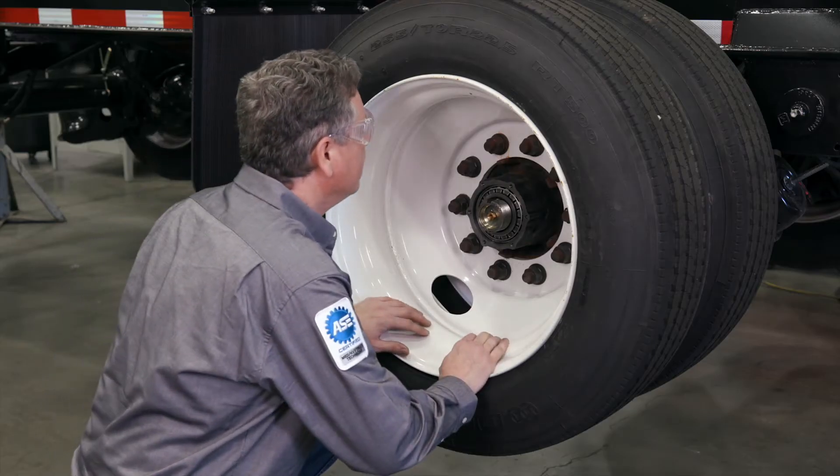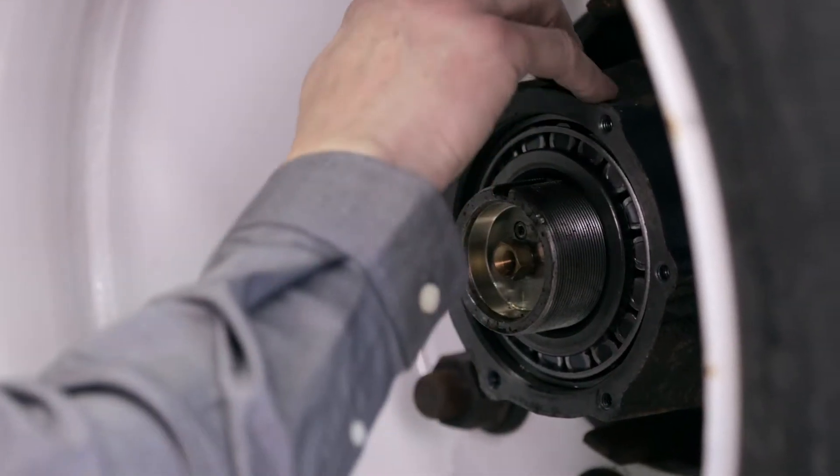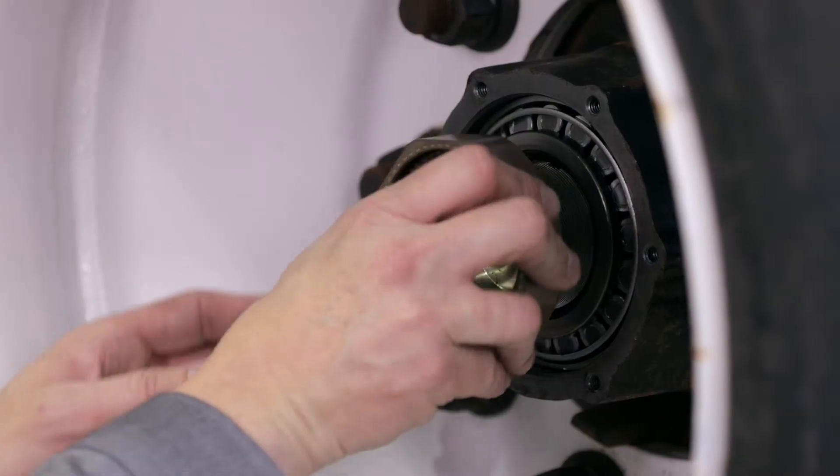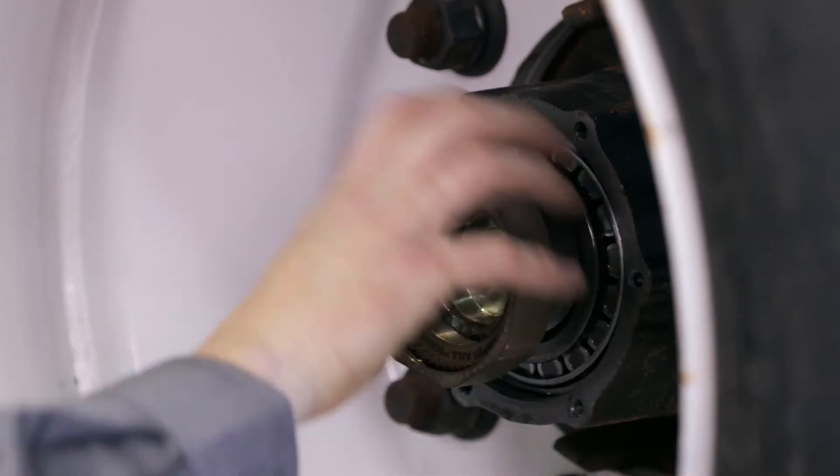Before beginning the bearing adjustment, inspect all wheel end components and repair any damage to the spindle threads. When preparing the wheel end for the bearing adjustment, ensure the hub is fully seated before making any adjustments.